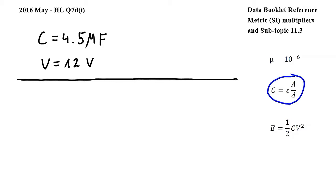Let's consider this equation from subtopic 11.3, where C is capacitance, epsilon is permittivity, A is the overlapping area of the capacitor plates, and D is the distance between the plates.